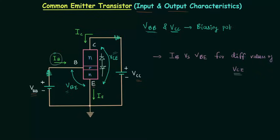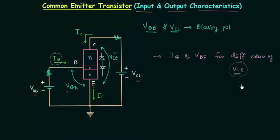To revise: the input characteristics of the common emitter transistor is similar to the forward bias diode because the input current IB is the current through the forward biased diode, and VBE, the input voltage, is the voltage across this forward biased diode. The important thing is the variation in characteristics because of VCE, the output voltage.